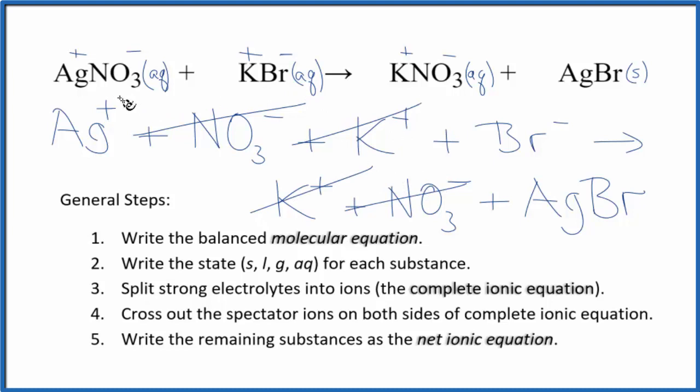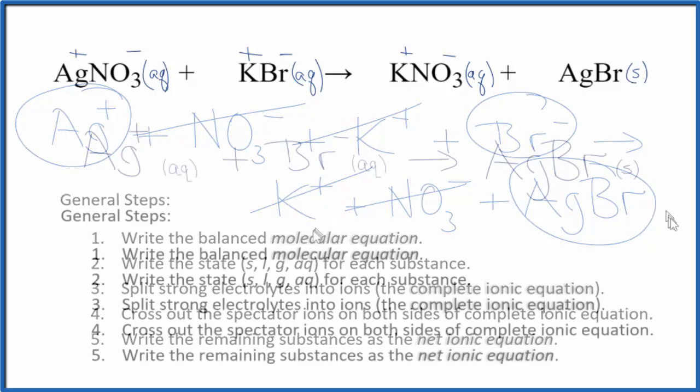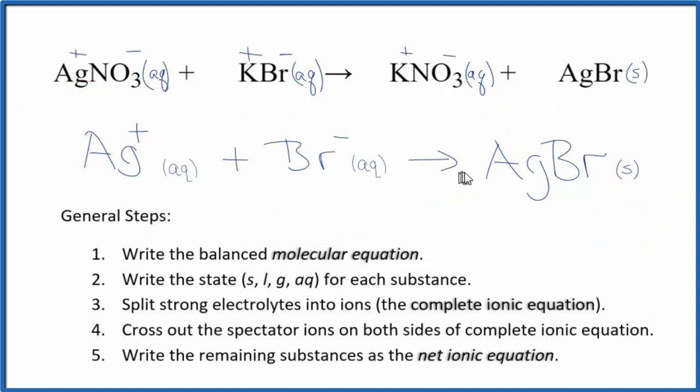What remains is the net ionic equation for AgNO3 plus KBr. I'll clean this up and write the states in. This is the net ionic equation for silver nitrate plus potassium bromide. You'll notice we have a positive and a negative—those cancel out to give a neutral compound.